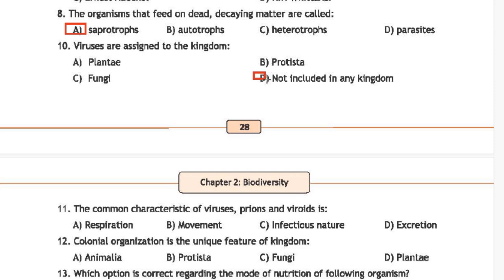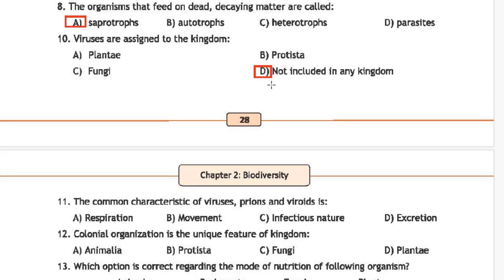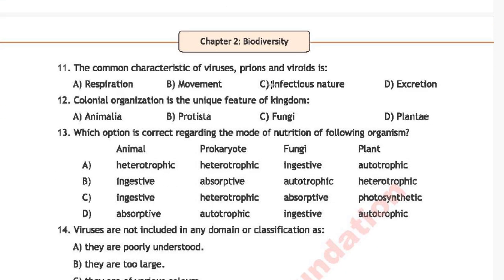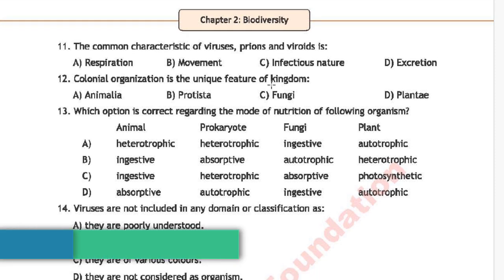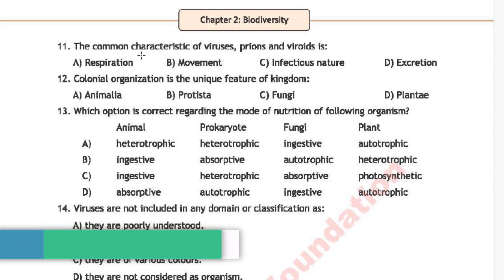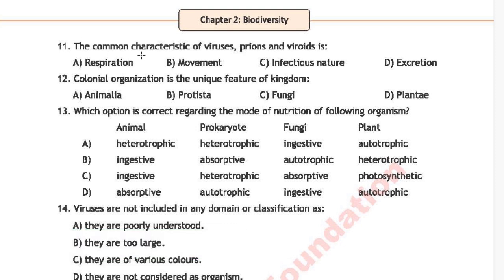Question 8: The common characteristic of viruses, prions, and viroids is — option A is respiration, option B is movement, option C is infectious nature, and option D is excretion. The correct answer is option C, infectious nature.